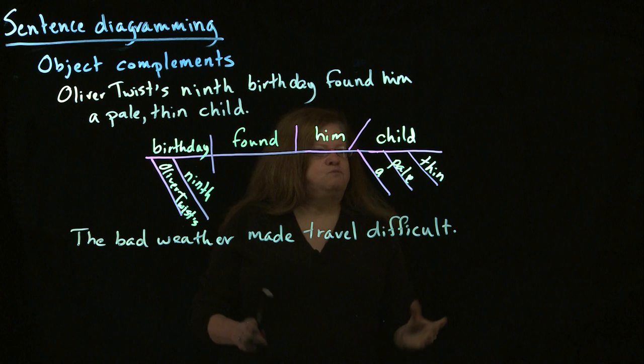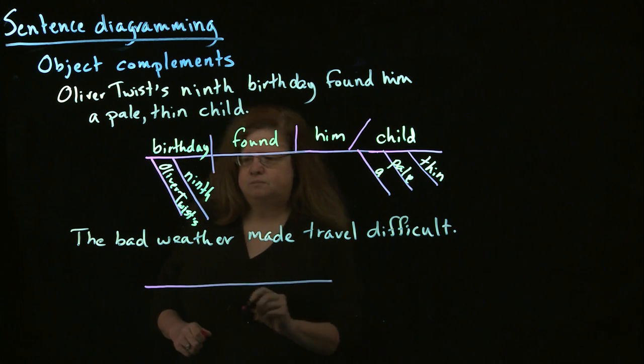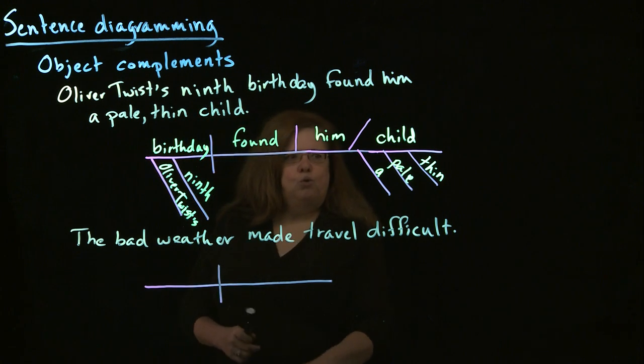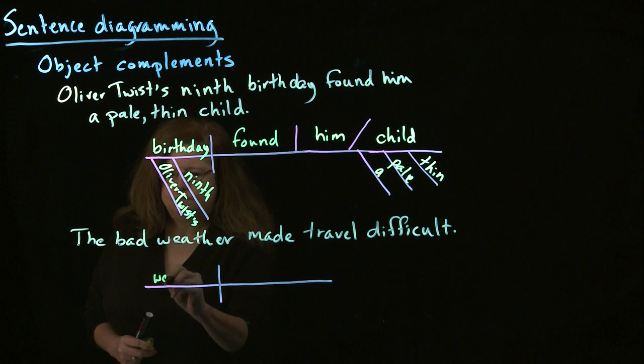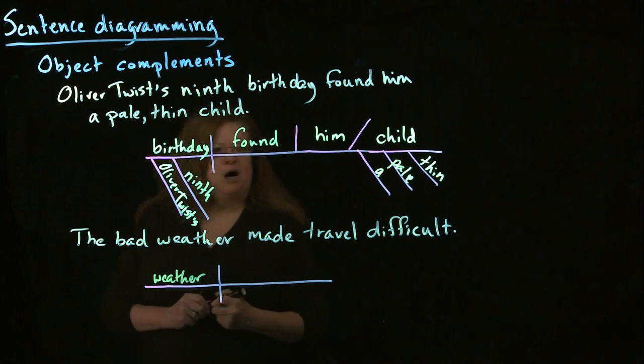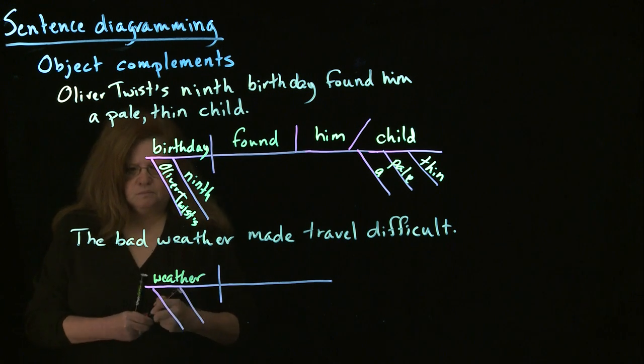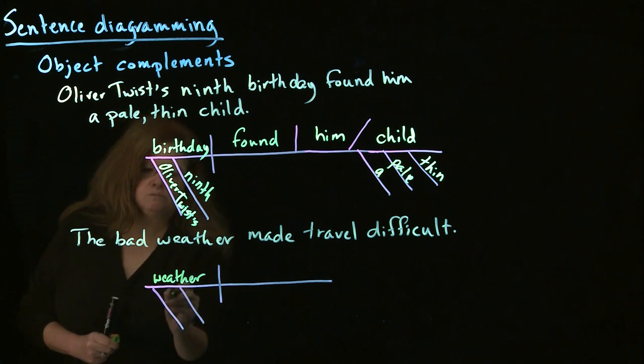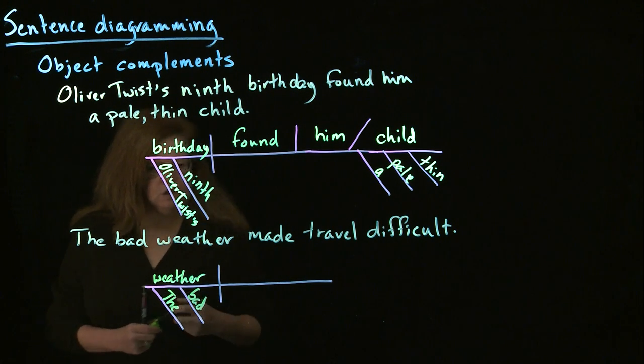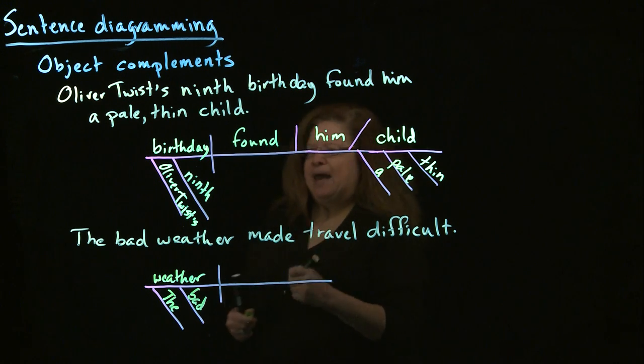So, once again, we start with our basic structure. We have our subject, which is weather, which has a couple of modifiers. The bad. We have our verb, what the weather is doing. It made.